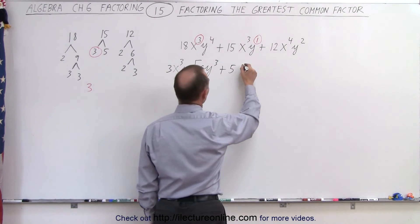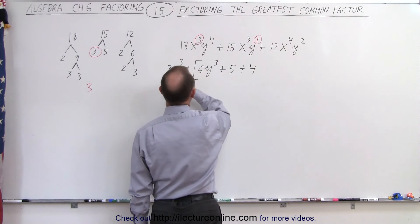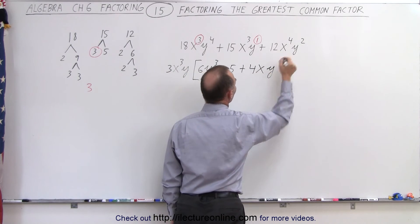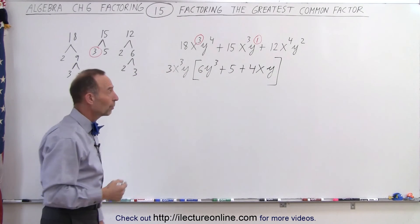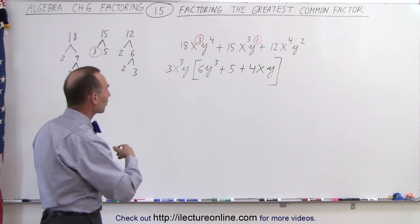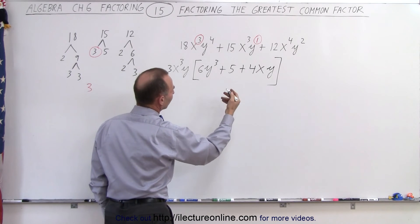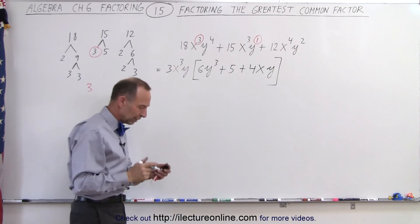Finally, the third term, 3 times 4 gives us 12. x cubed times x gives us x to the fourth. And y times y gives us y squared. And so here's how we find those three terms remaining after we factor out a common factor. So we can say if we now want to write it in a more sequential order, we can rearrange those two, but we don't have to do that.